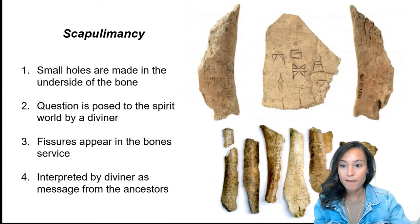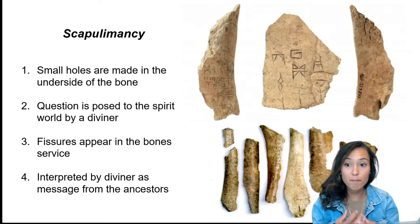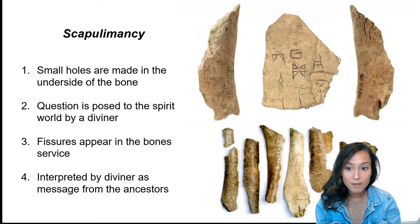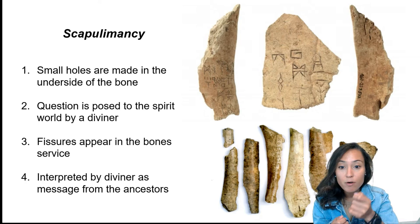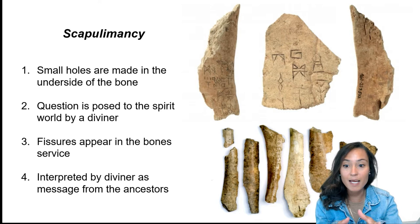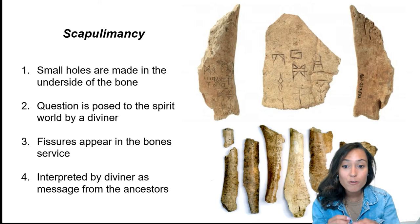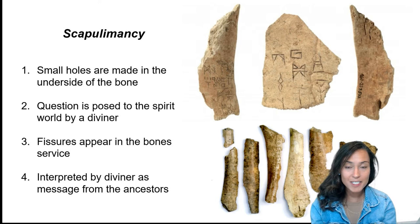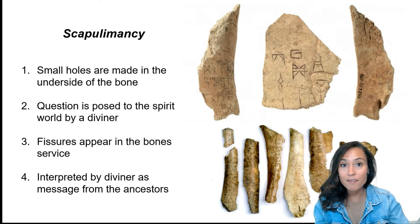Scapulomancy involved a series of steps in which the bones or shells were smoothed, cleaned, and then soaked in liquid. Small holes were then made in the underside of the bones. A diviner would pose a question to the spiritual world by applying a heated metal point to the hollows of the bones. Fissures would then appear on the bone's surface, and the diviner would interpret those fissures as messages from the ancestors. The diviner could control the extent and direction of the crack, and these divinations provided authoritative priests with useful ways of giving advice to royal consorts.